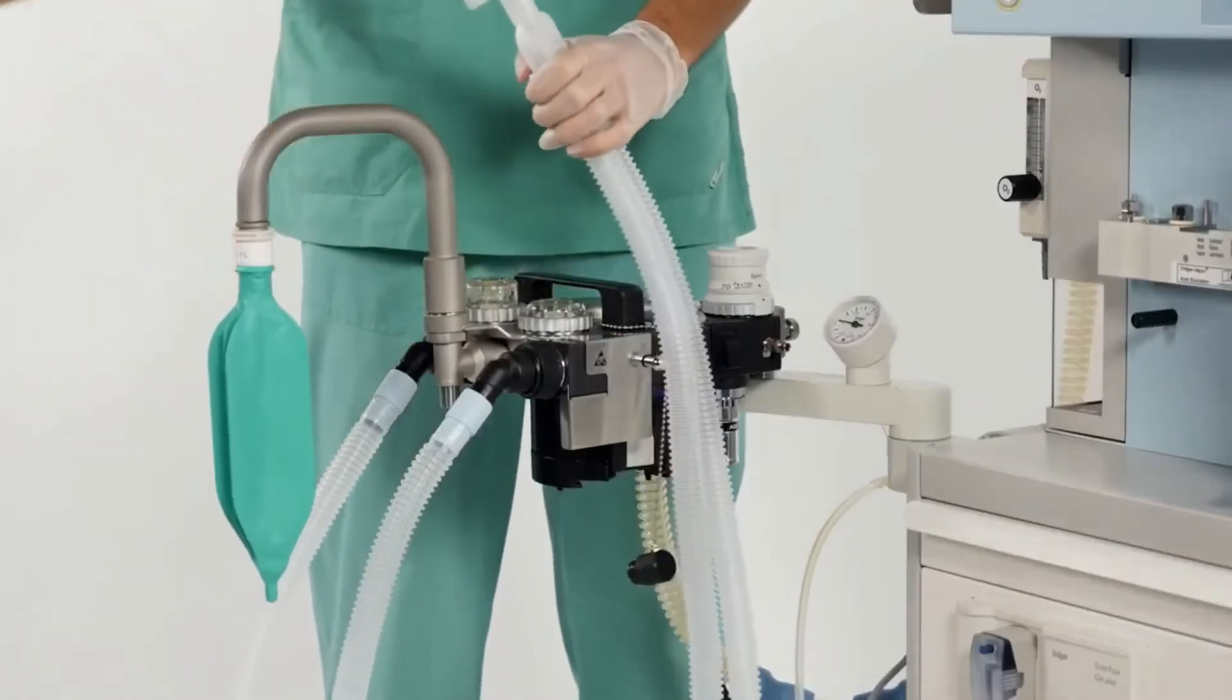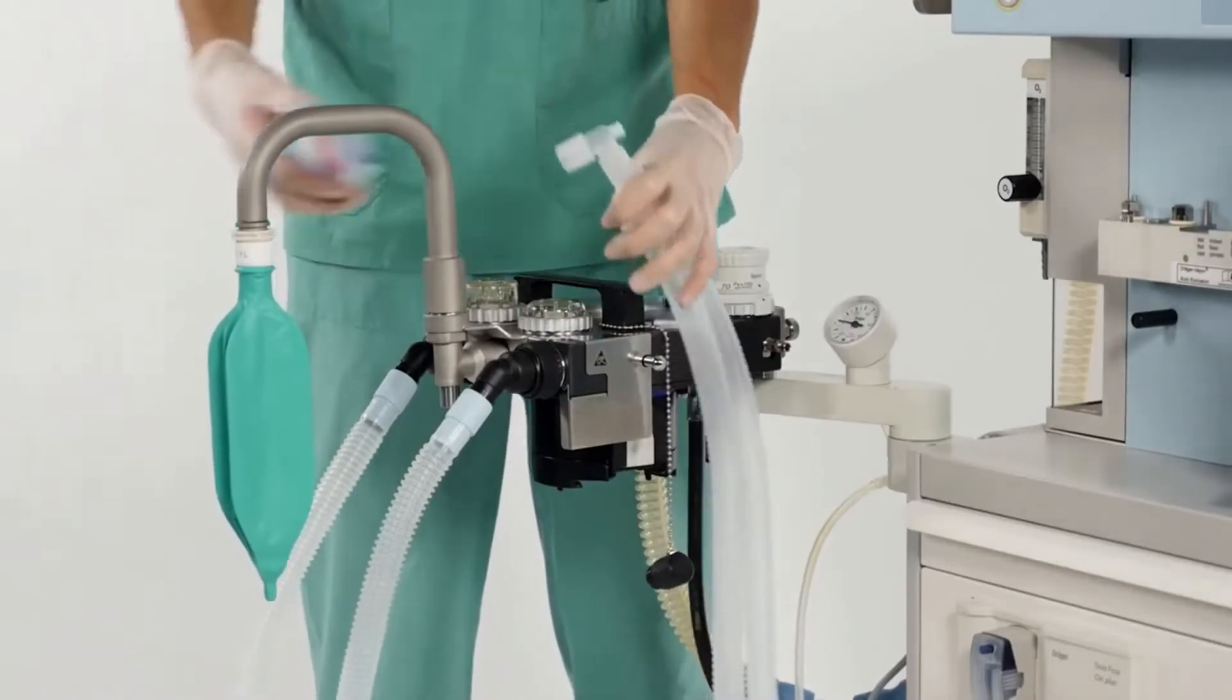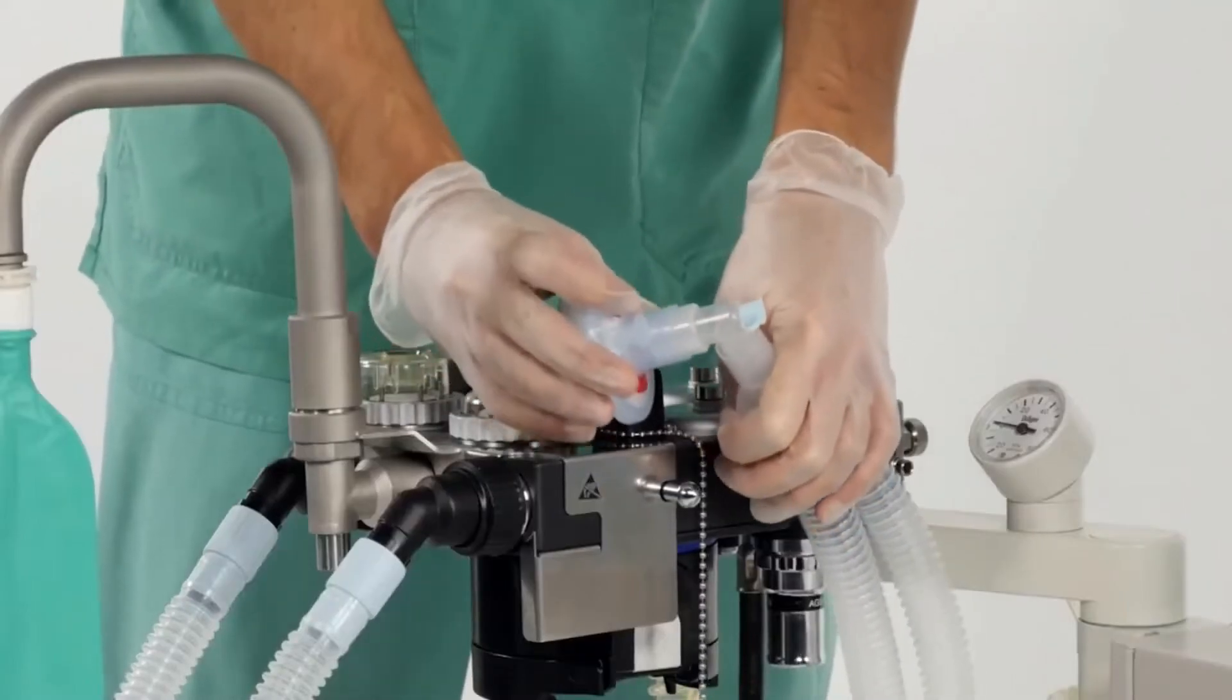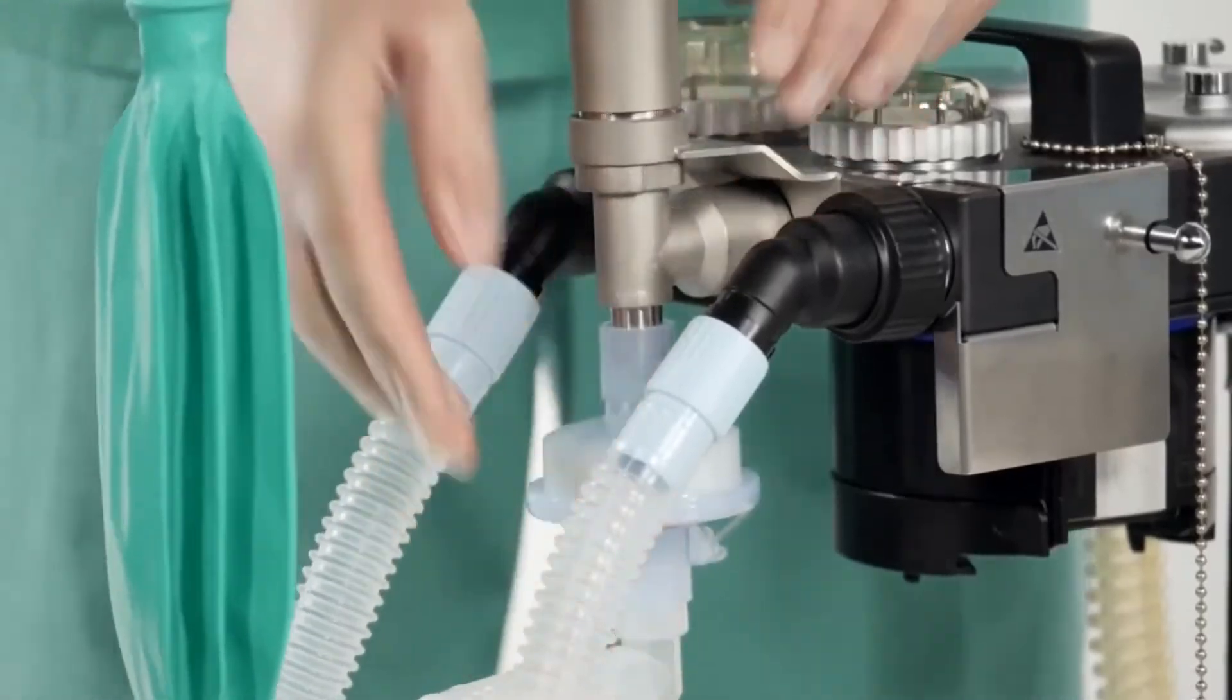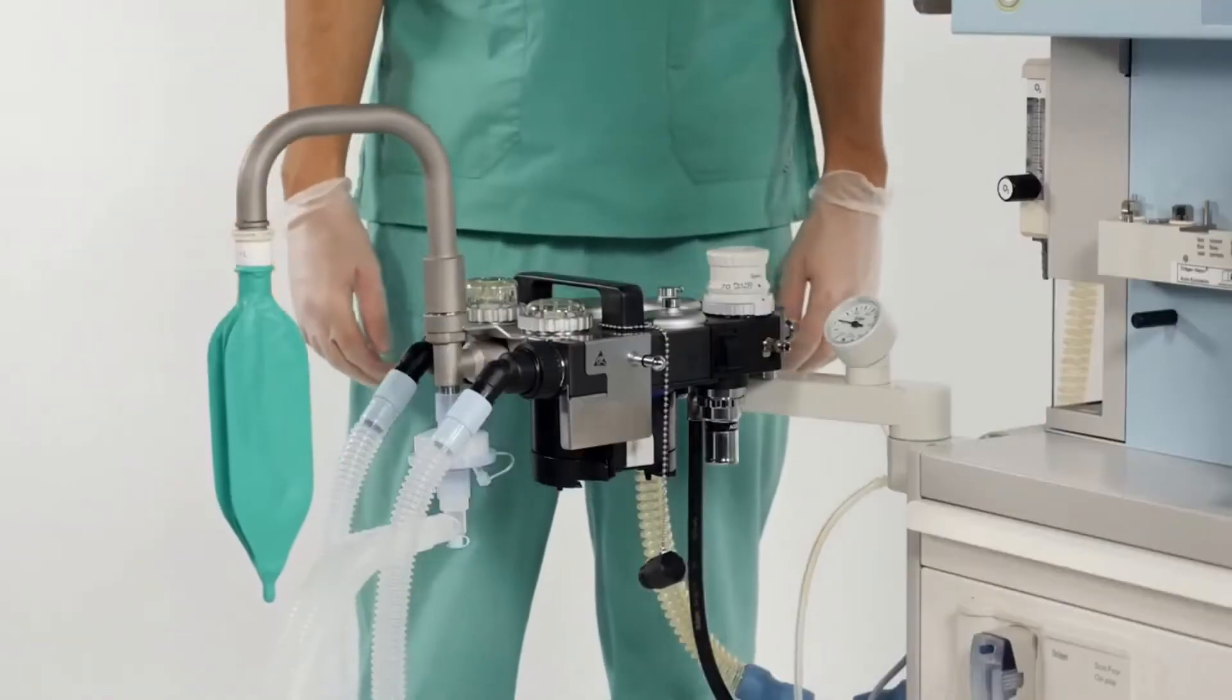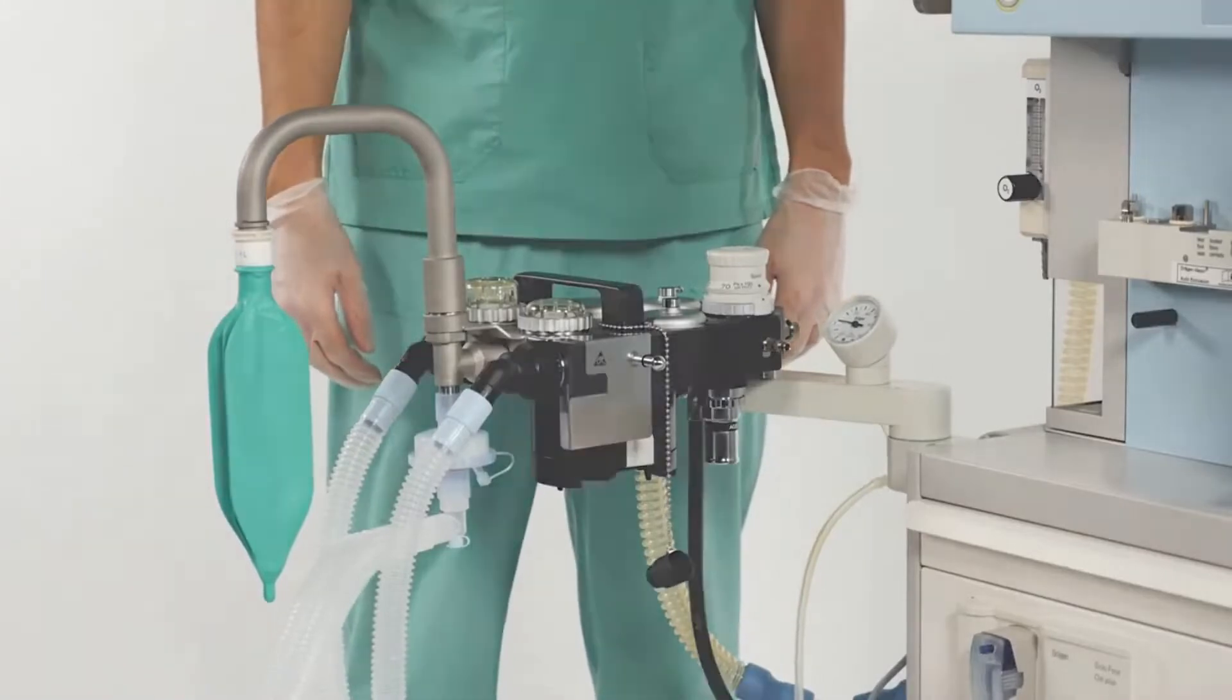All filters that will be used during operation should be installed as well, in order to include them into the self-test. In this case, we will use a filter on the Y-piece for demonstration. Place the filter on the park position on the bag port of the COSY.